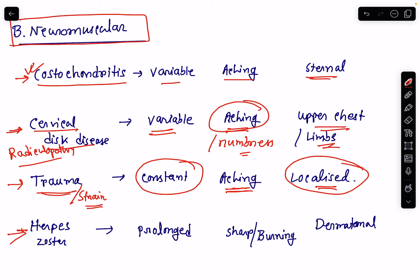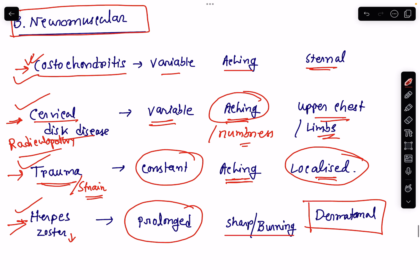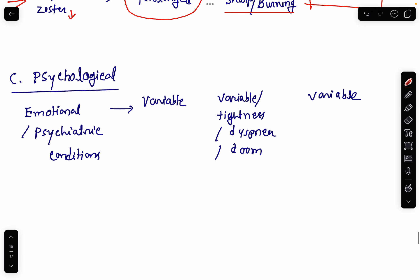Herpes zoster may lead to pain in the dermatomal distribution. The duration is usually prolonged. The character is sharp or burning type and it is localized in the dermatomal distribution. The associated feature is a vesicular rash over the particular area of pain. Costochondritis, cervical disc disease, trauma or strain, and herpes zoster are common neuromuscular causes of chest pain.